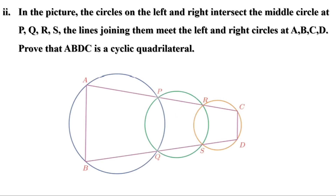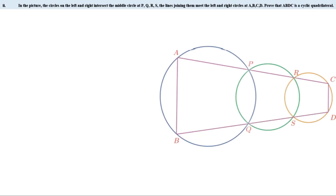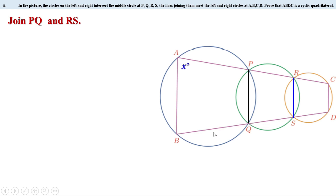Next problem: in the picture, circles on the left and right intersect the middle circle at P, Q, R, S. The lines joining them meet the left and right circles at A, B, C, D. Prove that ABDC is a cyclic quadrilateral. Let us join PQ and RS. Let angle A equal x°.